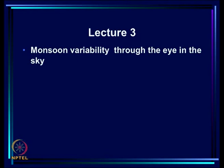In the last lecture, we have seen the nature of monsoon variability as analyzed from rainfall data. Today, we will begin with looking at what monsoon variability looks like from measurements from satellites — the eye in the sky — and then we will look at the Indian monsoon, the seasonal variation of surface winds, and develop the background required for understanding the various theories on mechanisms.